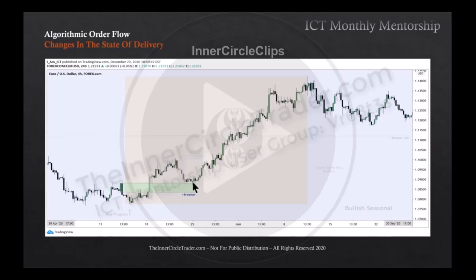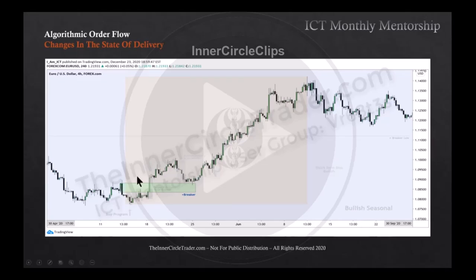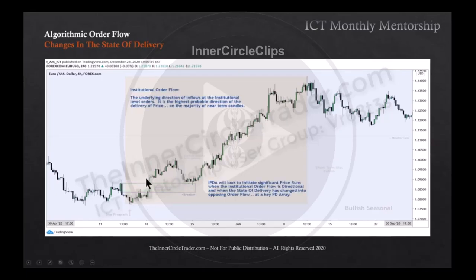You're framing it on the context of where the state of delivery changes. We have buy side, which is in the direction of our trade — that's what we anticipate. But if we start seeing a run back down into sell side here and then we have a bullish breaker, or it could have been an order block, or an optimal trade entry, you have a high probability setup. All these factors coming in give you this — your institutional order flow, which you're trying to determine. It is the highest probable direction of the delivery of price on the majority of near-term candles.